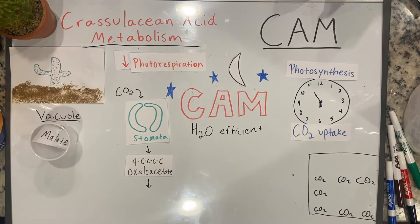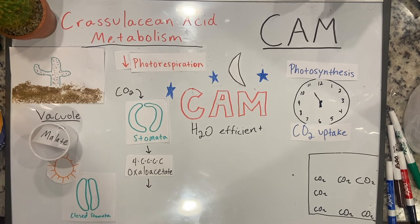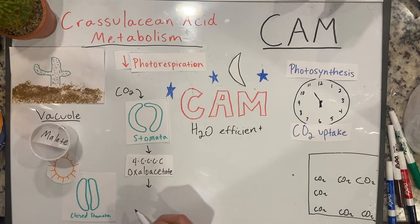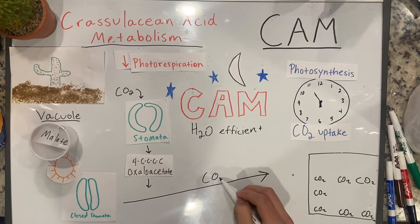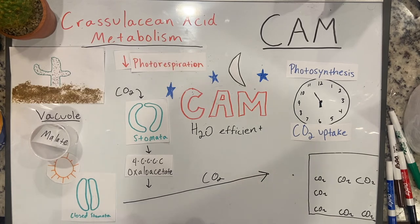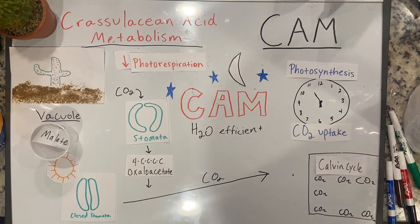During the daytime, CAM plants leave their stomata closed. However, photosynthesis still occurs as the organic acids are broken down into CO2. This then enters the Calvin cycle where CO2 is able to have high concentration around rubisco.